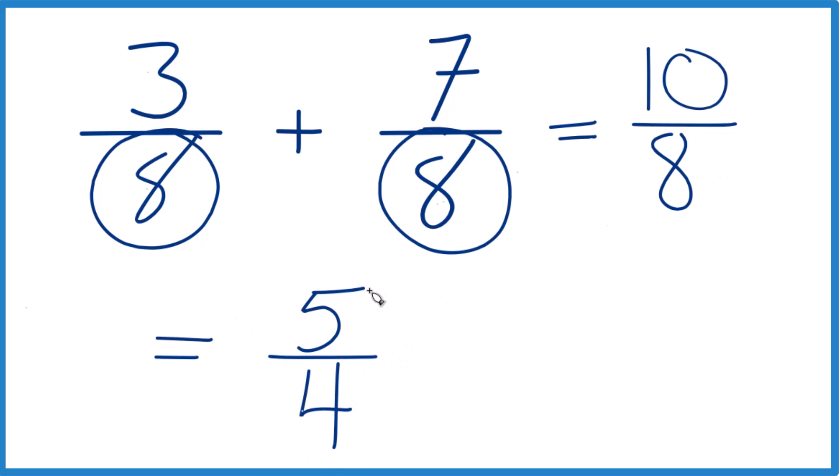So now we have 5 fourths, a little bit more simplified here. But this is an improper fraction because 5, that's larger than 4. So we can change it to a mixed number if we want. We could say 4 goes into 5, 1 times 4, that's 4, plus 1, that's 5, so we have a remainder of 1.